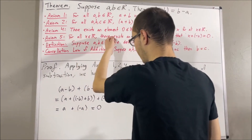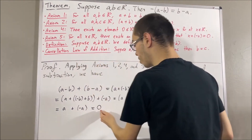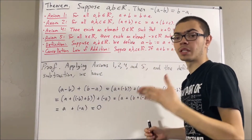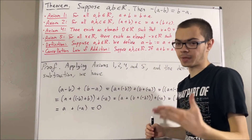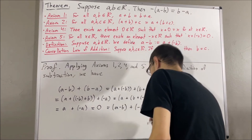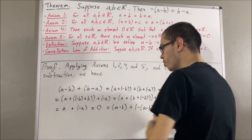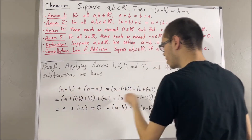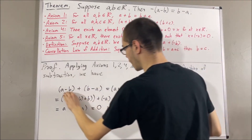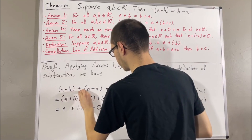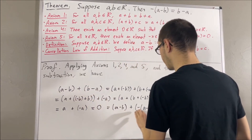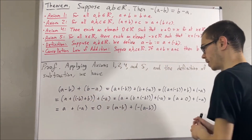But then by axiom 5 again, 0 is equal to a minus b plus the negative of a minus b. And so, through this chain of equalities, we have established that a minus b plus b minus a is equal to a minus b plus the negative of a minus b.